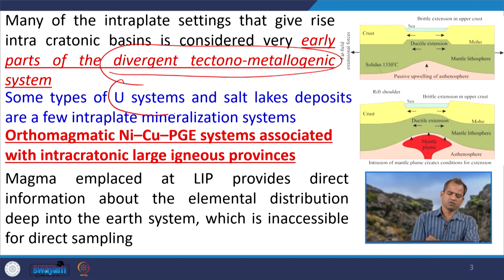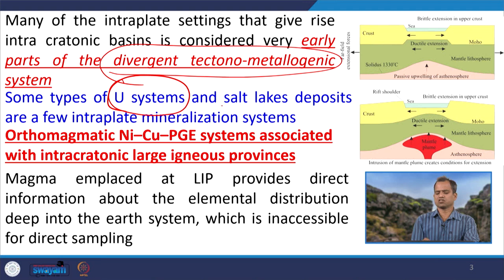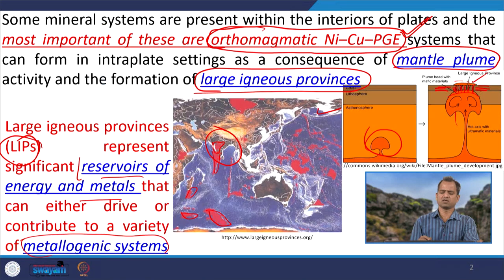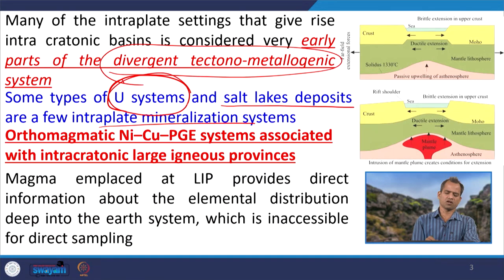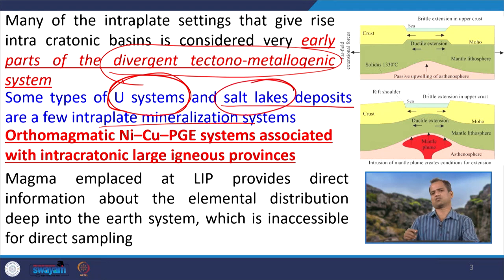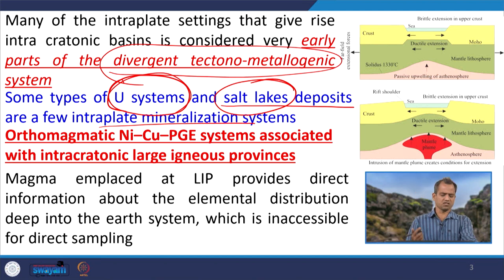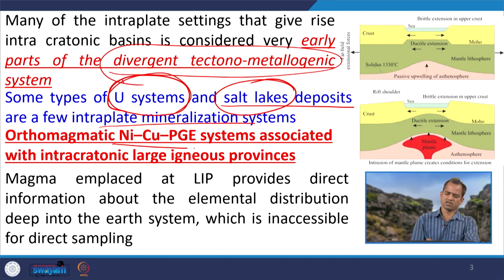Mostly some types of uranium systems and salt-like deposits also occur as intraplate mineralization, apart from the nickel, copper, and PGE deposits. We have uranium systems and we have salt deposits. Salt deposits are a very important source for many minerals, and the orthomagmatic nickel-copper-PGE deposit has already been discussed.